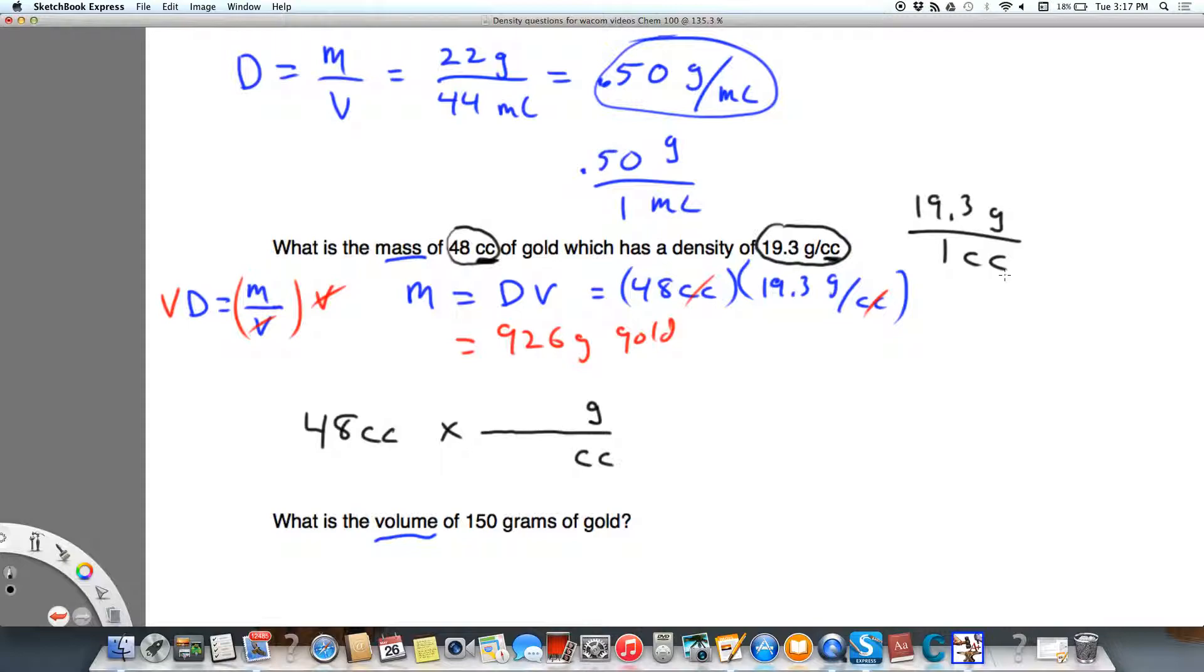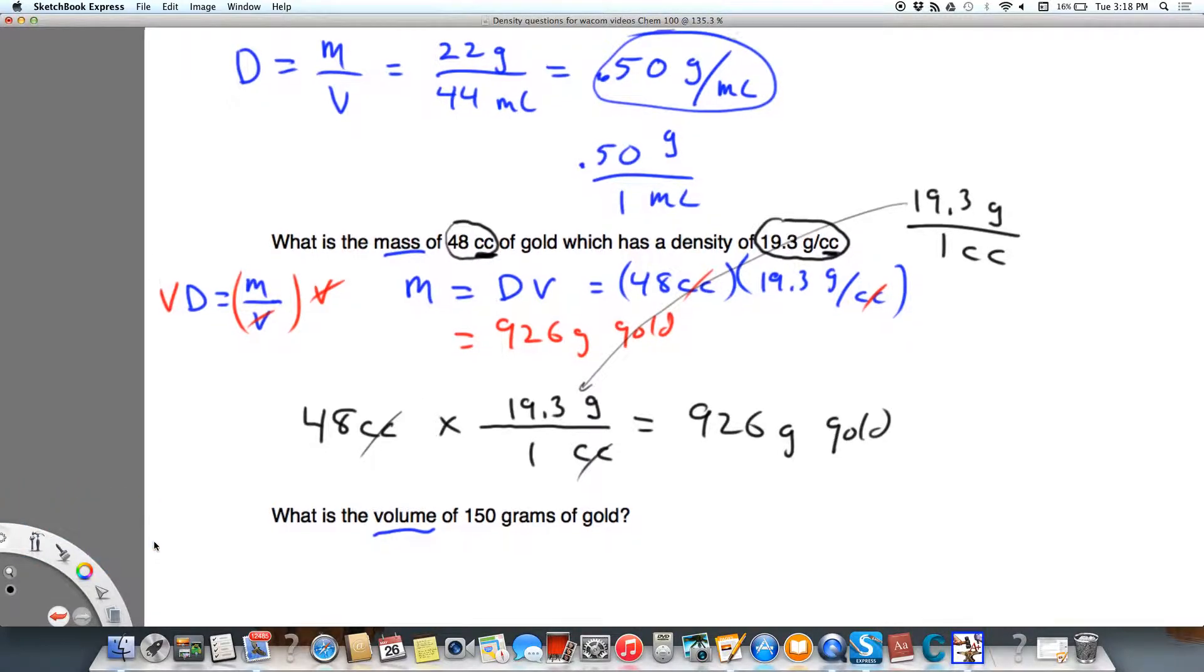And if I look at 19.3 grams per 1 cc, if I write it like that, then I see that the 19.3 always goes with grams, and then 1 is going to go with cc's. You'll see that the units cancel, and I get 926 grams of gold. So starting with the formula might be easy for you, or starting with the units. Whichever way is easier is fine.